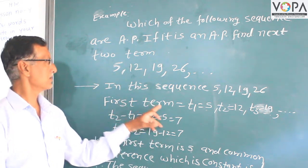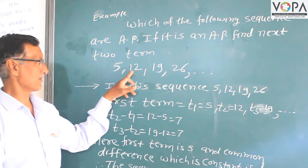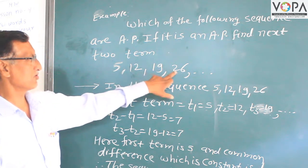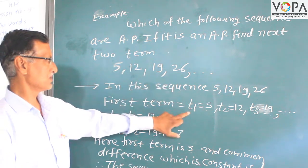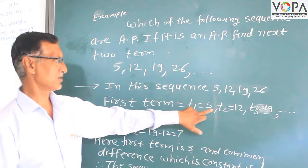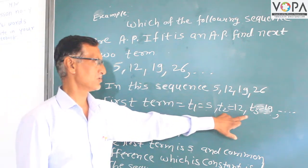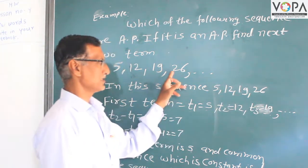The first term T1 is equal to 5, T2 is equal to 12, T3 is equal to 19, and T4 is equal to 26.